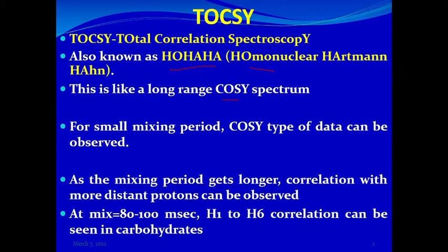TOCSY is essentially a long-range COSY in which you can see correlations between protons that are more than three bonds away from each other, but they should exist in the same spin system. This means that the correlation can be extended across the whole spin system as long as we have hydrogens attached to carbons, but once we have a quaternary carbon or a heteroatom, the spin system breaks.